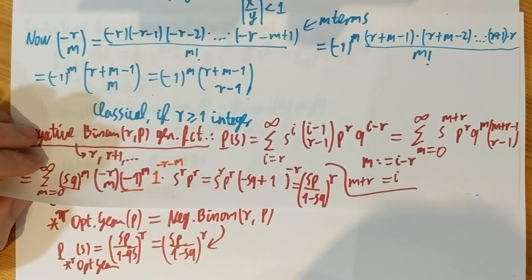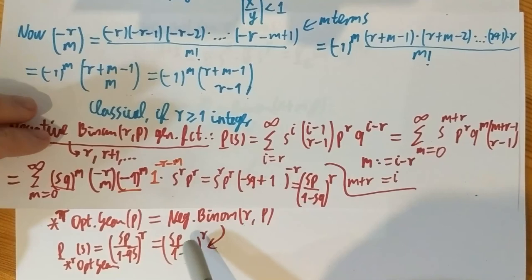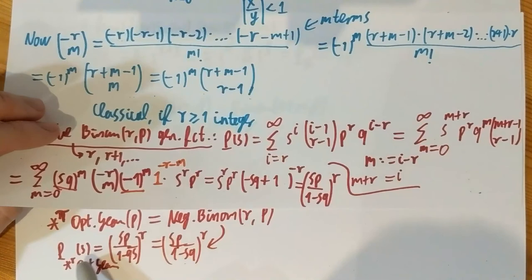So if you don't use the probabilistic interpretation of geometrics and negative binomials, you can use generating functions and go through the negative binomial coefficients — which actually gave the name of the negative binomial distribution — and Newton's binomial theorem to conclude that the r-fold convolution of optimistic geometrics is negative binomial.